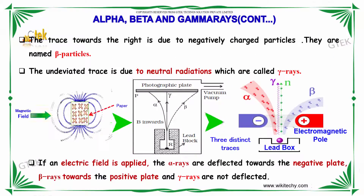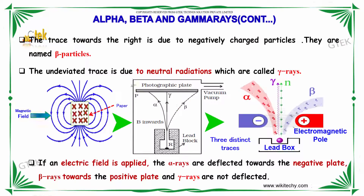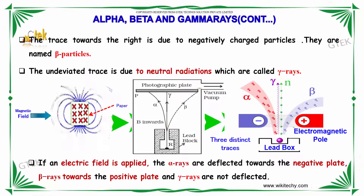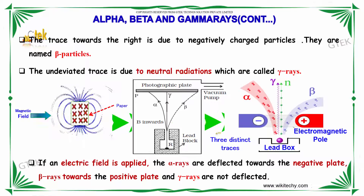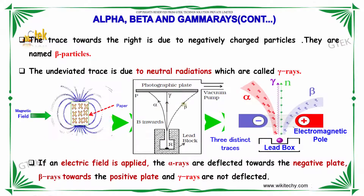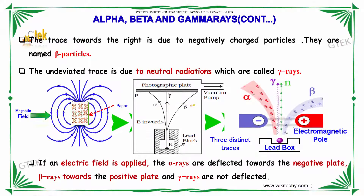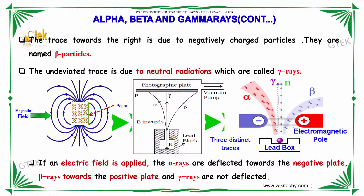The trace deflected to the right is due to negatively charged particles, named as beta particles. The undeviated trace is due to the neutral radiation, which is called gamma rays. If an electric field is applied, the alpha rays are deflected towards the negative plate, beta rays towards the positive plate, and gamma rays remain undeflected.